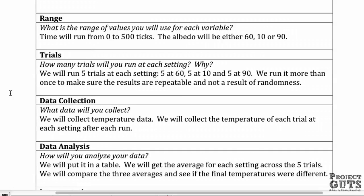Then what about the range? Think about the range of values you will use for each variable. We will run time from 0 to 500 ticks. That means that we're going to run the model until 500 ticks have gone by, or the clock reads about 500.